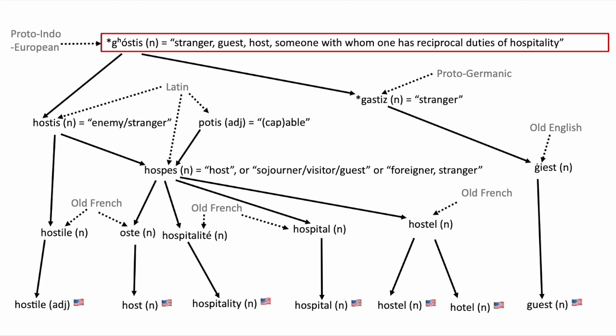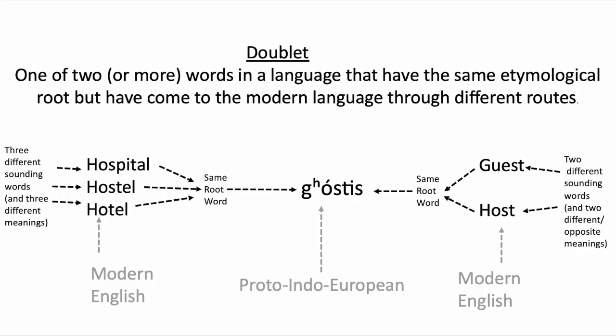And you can see many of them here in this chart. For example, hotel, hospital, hospitality, and guest all descend from that single Indo-European word. And so those words are all what's called a doublet, meaning they all have the same root, but got to mean what they came to mean today through different paths and with the influence of different languages.